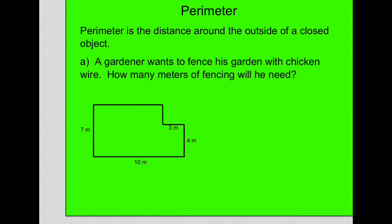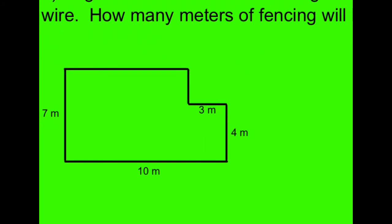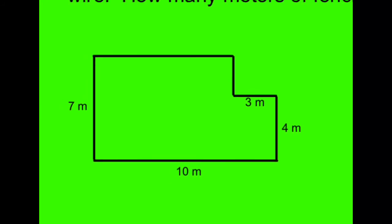There's two parts to this problem we're going to look at. It says a gardener wants to fence his garden with chicken wire. How many meters of fencing will he need? So what I have here is a garden shape, and there's a little section that's not part of the garden. So when you're going to calculate the perimeter, you want to know the distance around that entire object that I'm outlining right now.